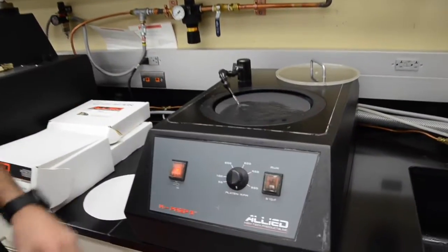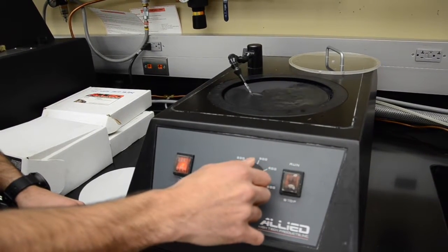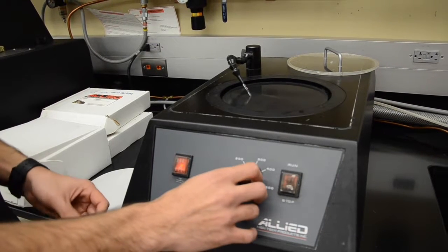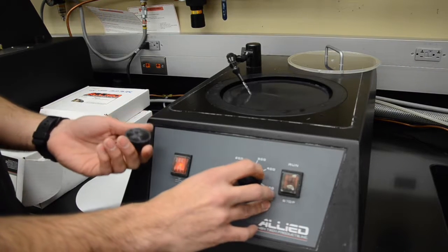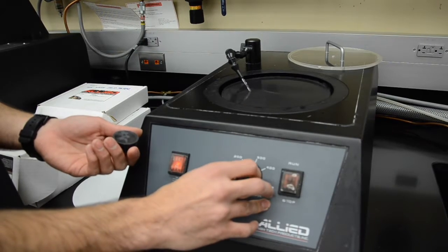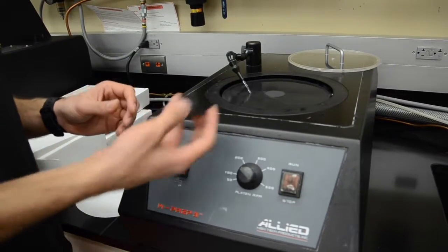This will start the platen to run. Here you control how fast the platen is moving or the RPMs of the platen. For manual grinding, I don't suggest going higher than 250. So somewhere right there should be fine. And you have your sample.